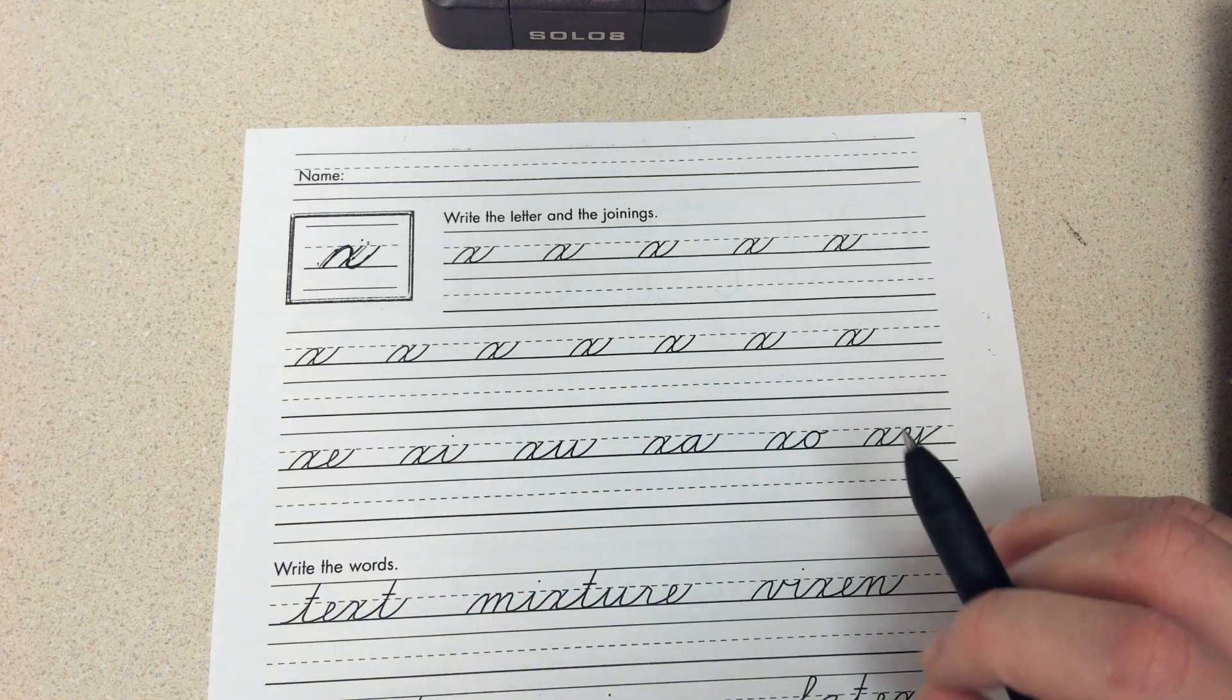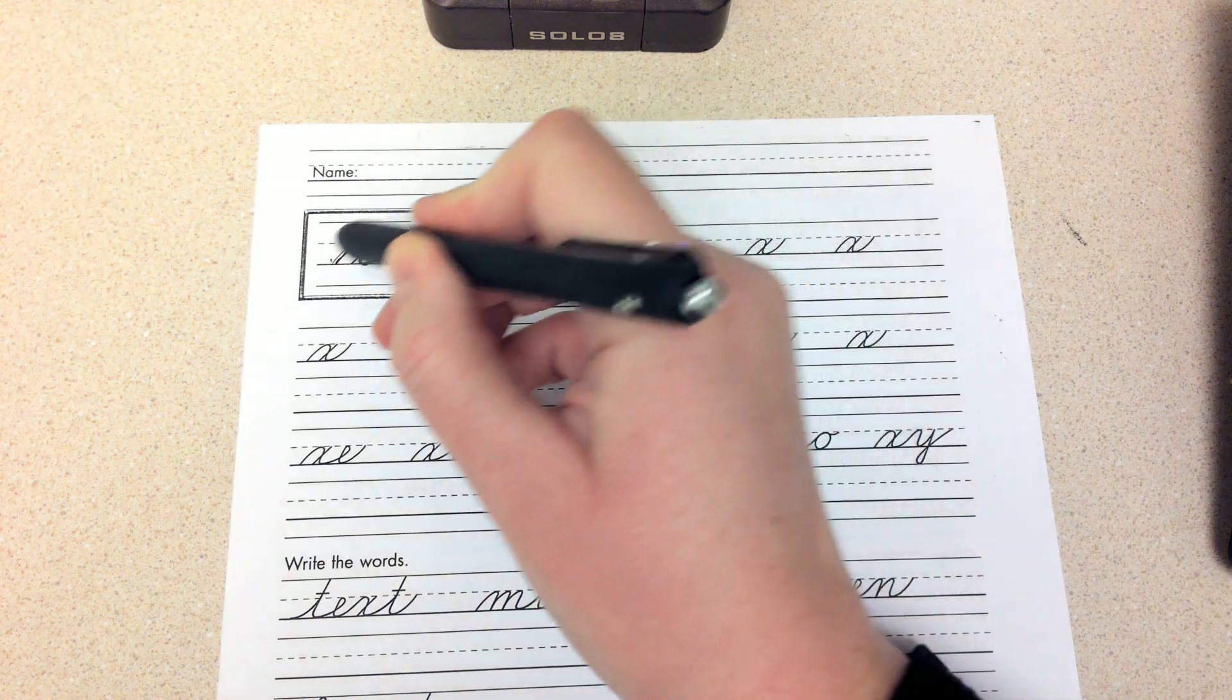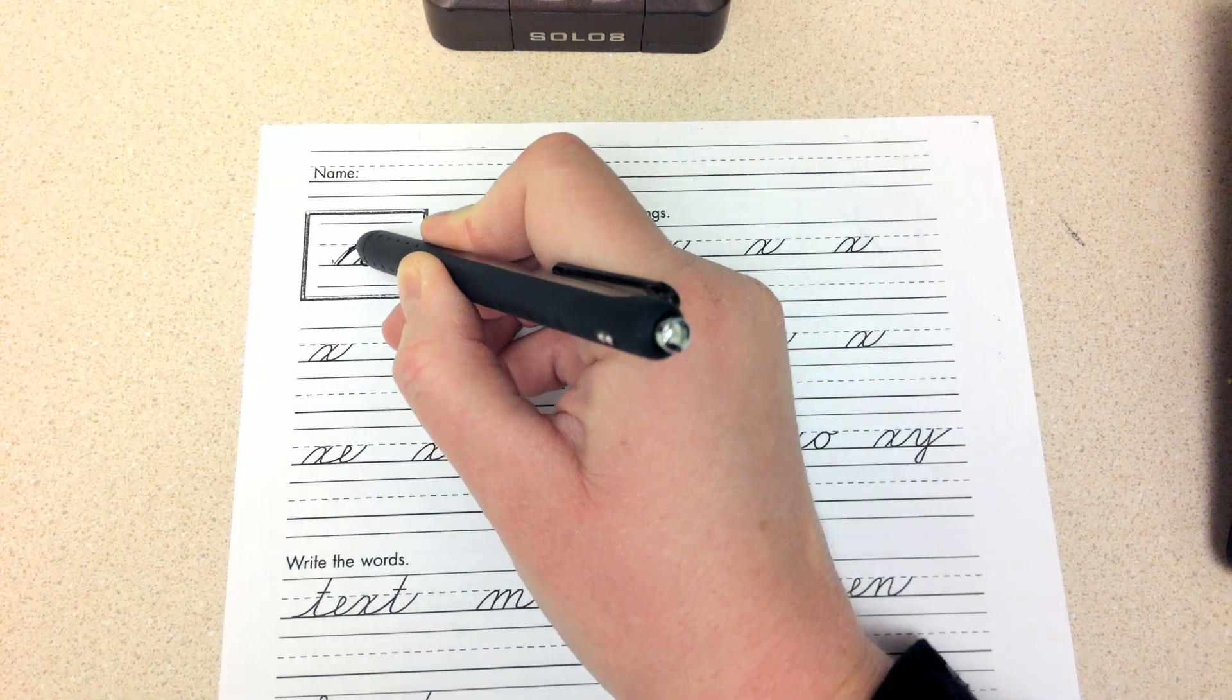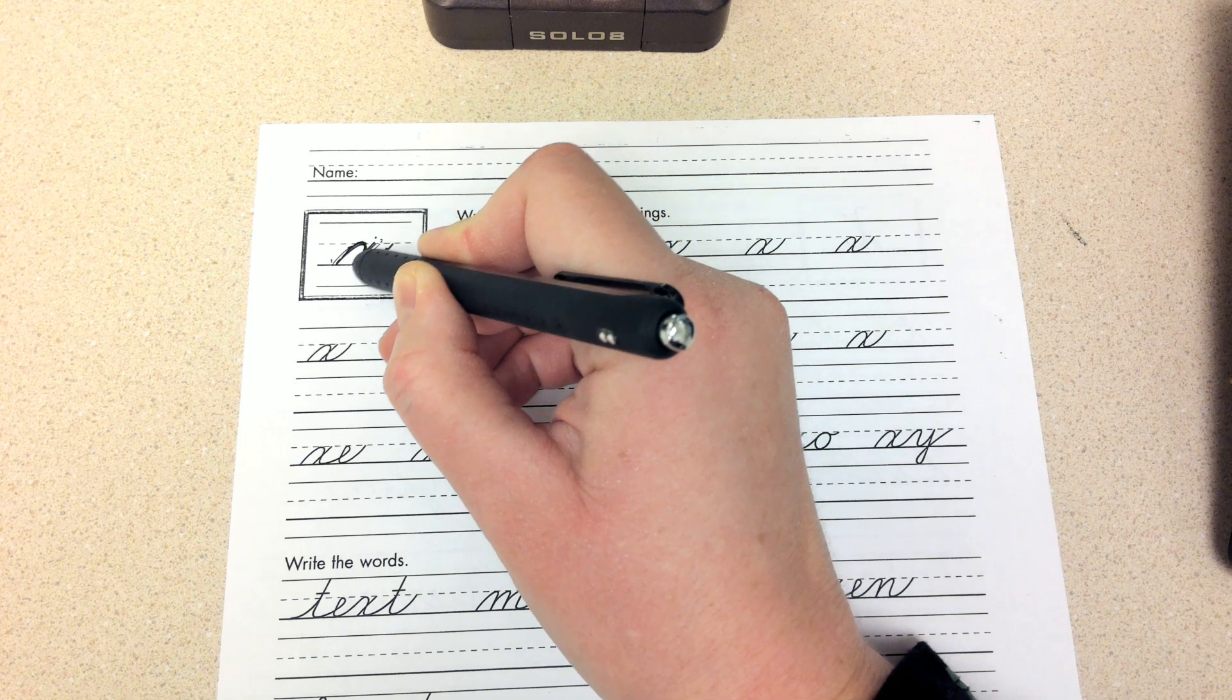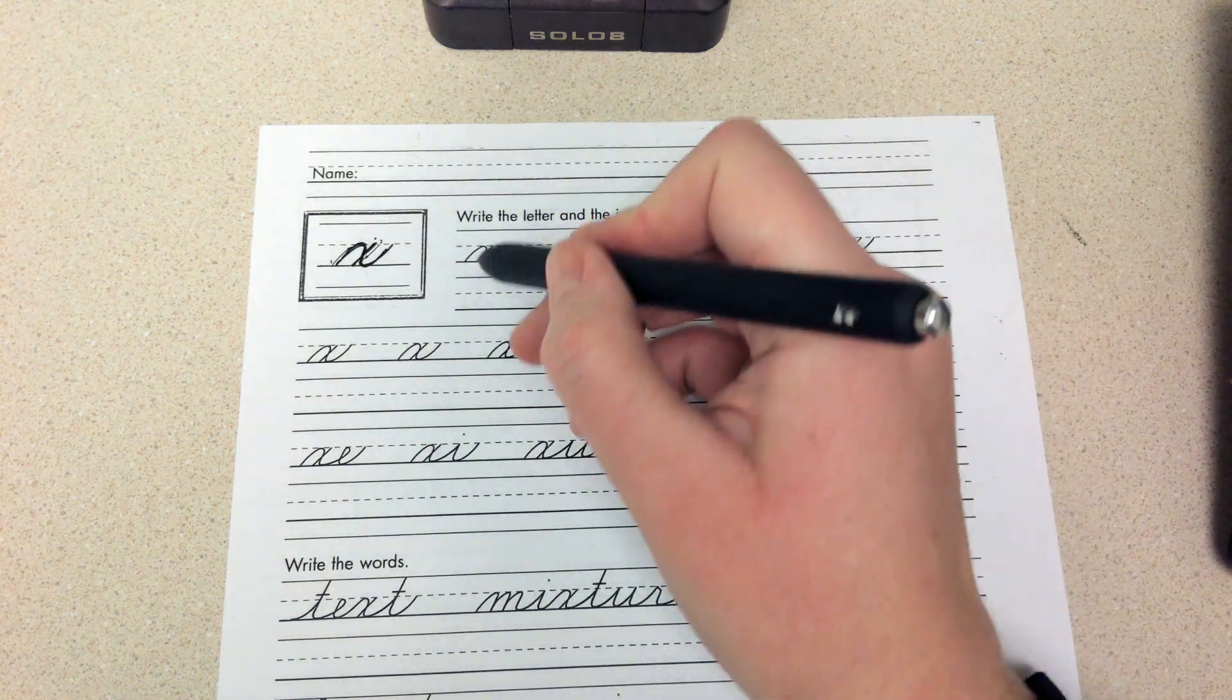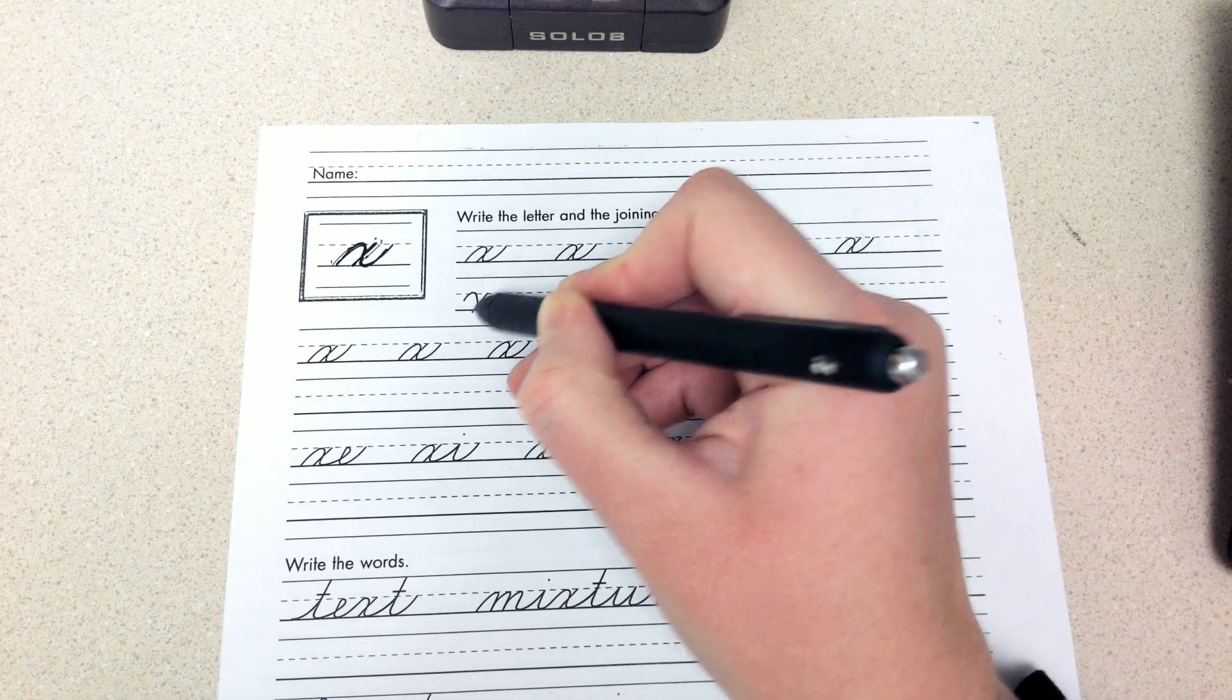Okay, our last one for today is lowercase x. We start and go around on this one, same with the uppercase. It's got a round piece and then a straight line to connect all of this line.